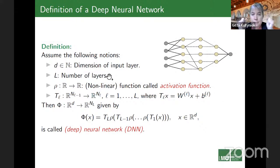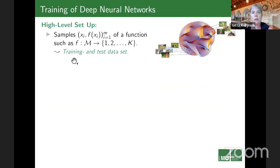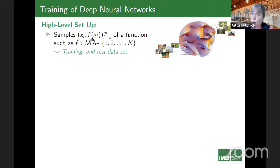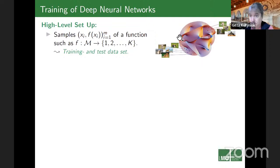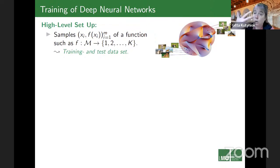To get to the key theoretical questions, let me take you through how we apply a neural network. The goal is to learn a function we don't know, from which we only know sample values — a highly complicated function, perhaps defined on a lower-dimensional manifold. In a classification example, images of cats are mapped to value 1 and images of dogs to value 2. We have samples (images) and their labels. We split these into a training set and a test set — the test set is set aside.